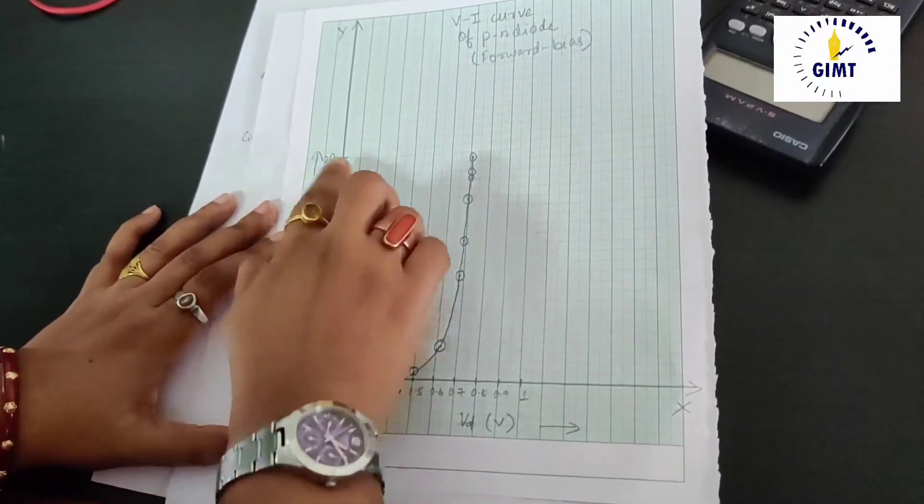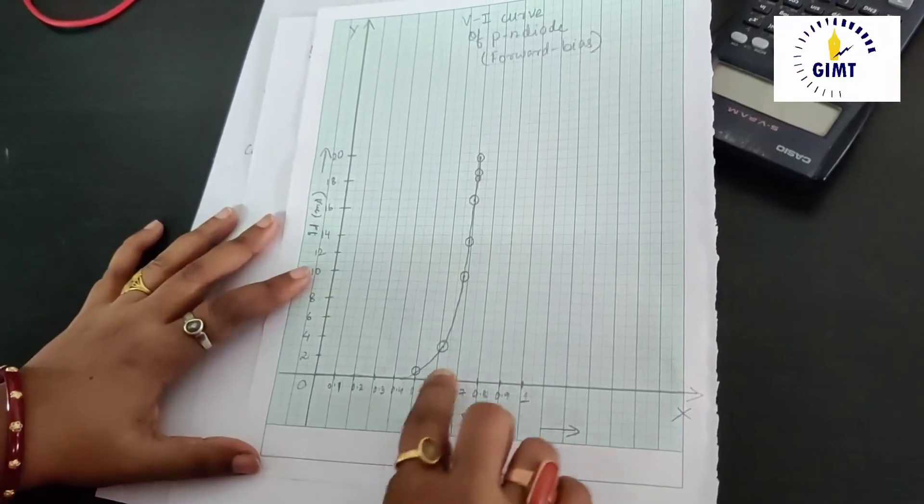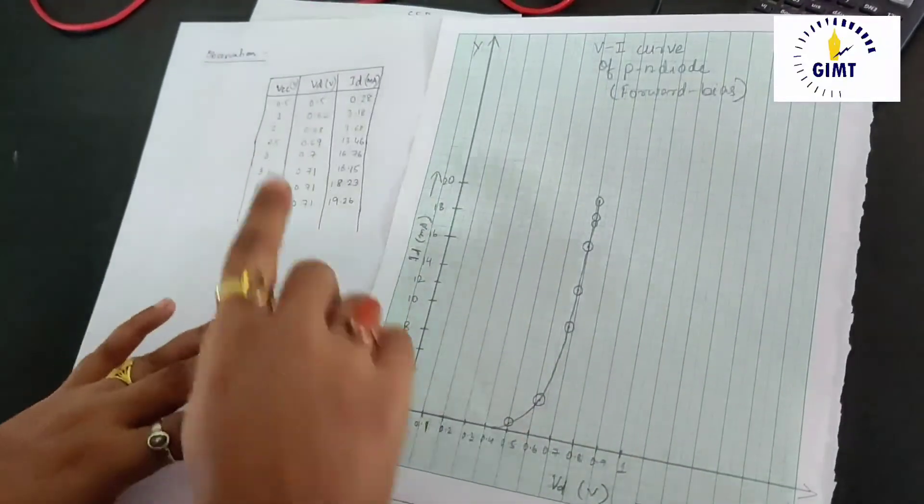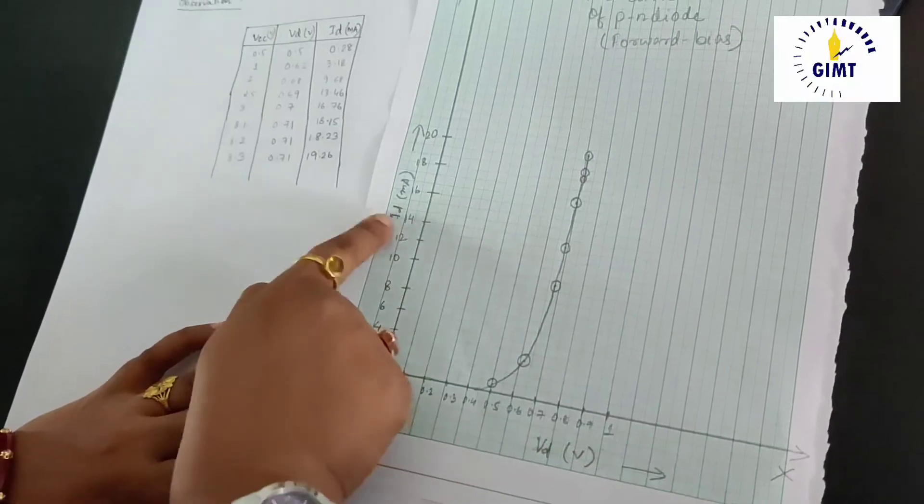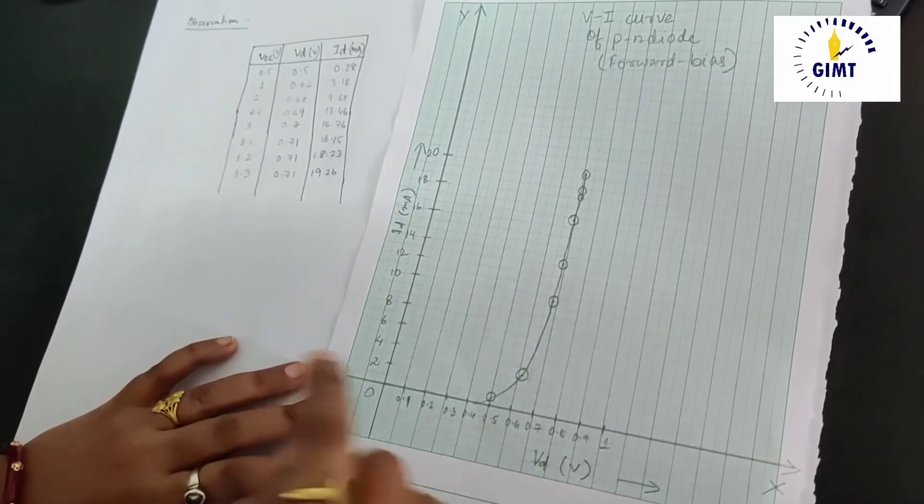Correspondingly, we have taken the scale and according to this table, we have plot the diode voltage and correspondingly, diode current.